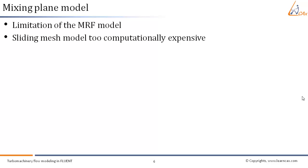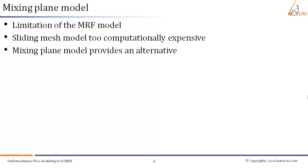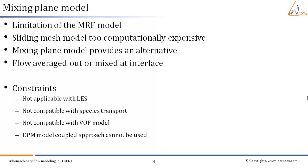Also, the sliding mesh model, although suitable in some cases, may be too computationally expensive — for example in multi-stage turbomachinery. In such cases the mixing plane model provides an alternative. In this model, each fluid zone is treated as a steady-state problem. Flow field data from adjacent zones are passed as boundary conditions that are spatially averaged — or mixed out — at the interface. The mixing or averaging removes any unsteadiness that would arise due to circumferential variations like wakes, shock waves, and flow separation, giving a fairly good time-averaged flow field.